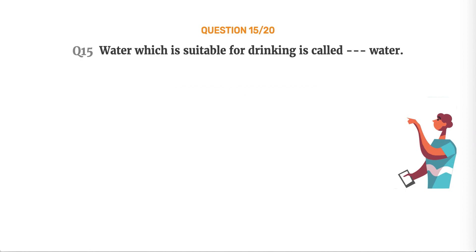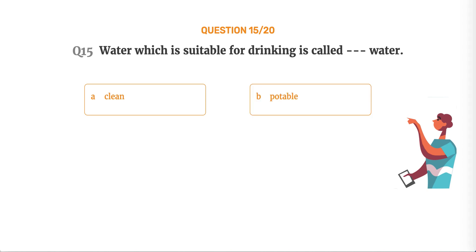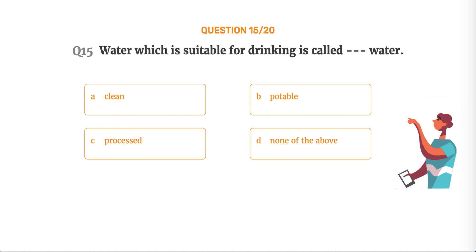Question number 15. Water which is suitable for drinking is called dash water. Option A, Clean. Option B, Potable. Option C, Processed. Option D, None of the above.